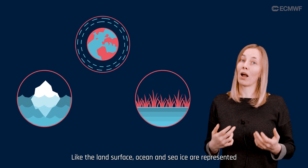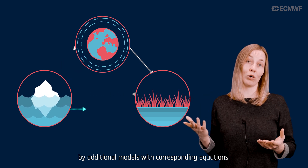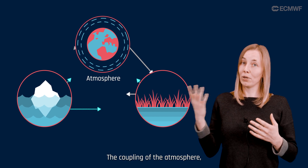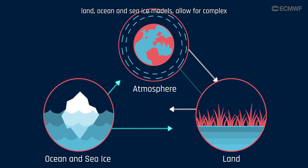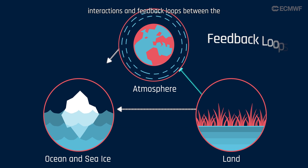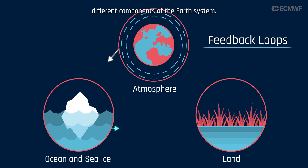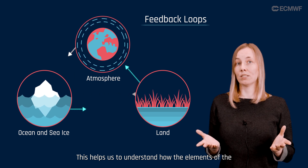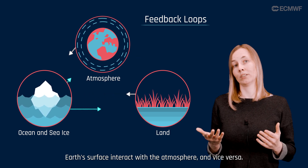Like the land surface, ocean and sea ice are represented by additional models with corresponding equations. The coupling of the atmosphere, land, ocean and sea ice models allows for complex interactions and feedback loops between the different components of the Earth's system. This helps us to understand how the elements of the Earth's surface interact with the atmosphere and vice versa.